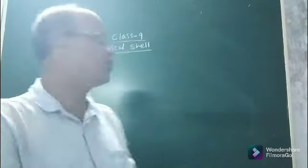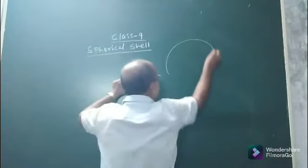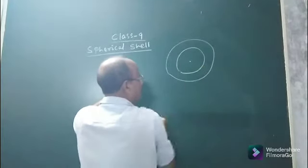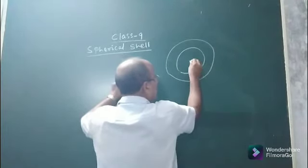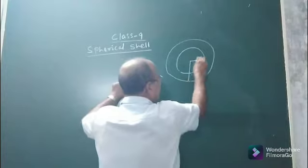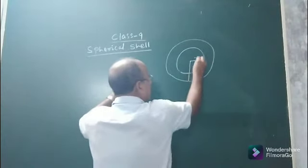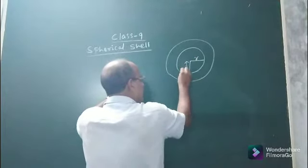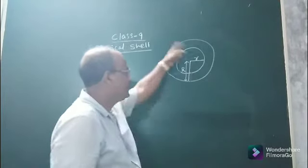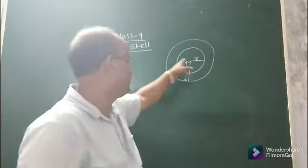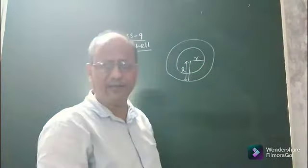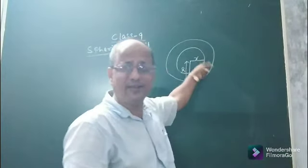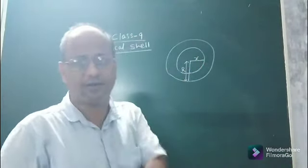Now look at this spherical shell. This is the figure of a spherical shell. Suppose this is the outer radius and this is the inner radius — let inner radius be small r and outer radius be capital R. So we can say that a spherical shell is a three-dimensional solid made up of two concentric solid spheres.